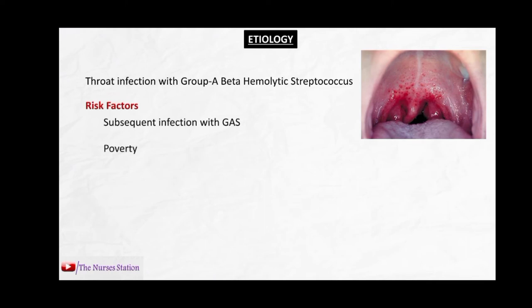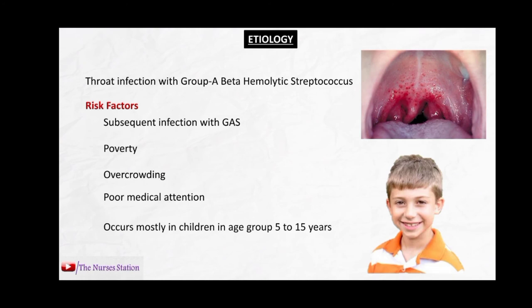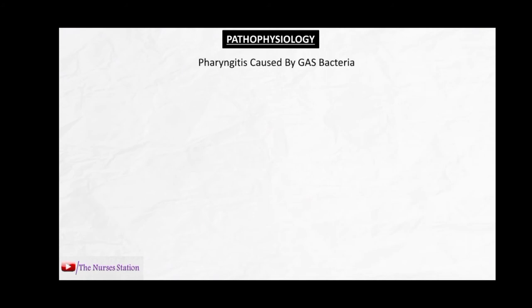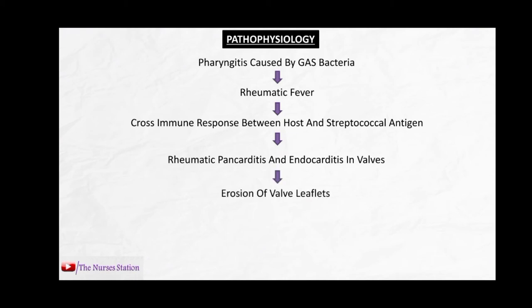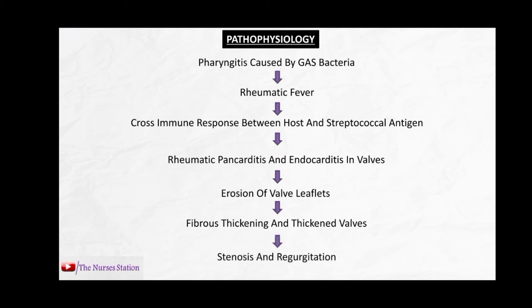Risk factors associated with the development of rheumatic fever include subsequent infections with group A streptococcus, poverty, overcrowding, poor medical attention, and under-diagnosis. It occurs mostly in children aged 5 to 15 years. In the pathophysiology, pharyngitis caused by group A streptococcus may develop into rheumatic fever through cross-immune response — molecular mimicry — between host and streptococcal antigens. This causes rheumatic pancarditis; endocarditis leads to continuous valve leaflet erosion, healed by fibrous thickening, which results in stenosis and regurgitation.